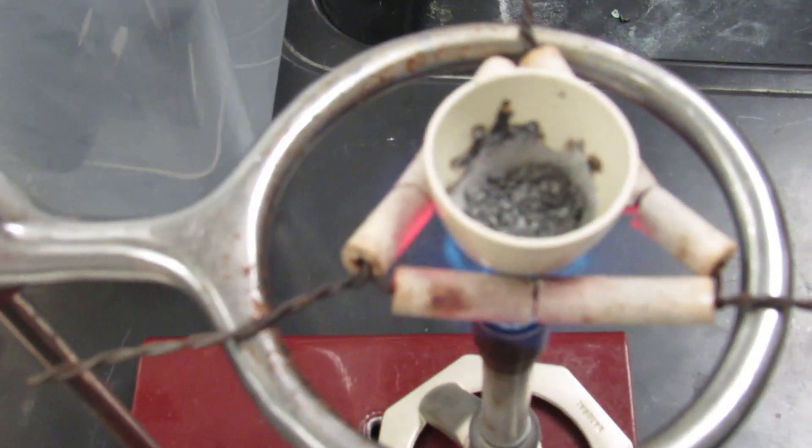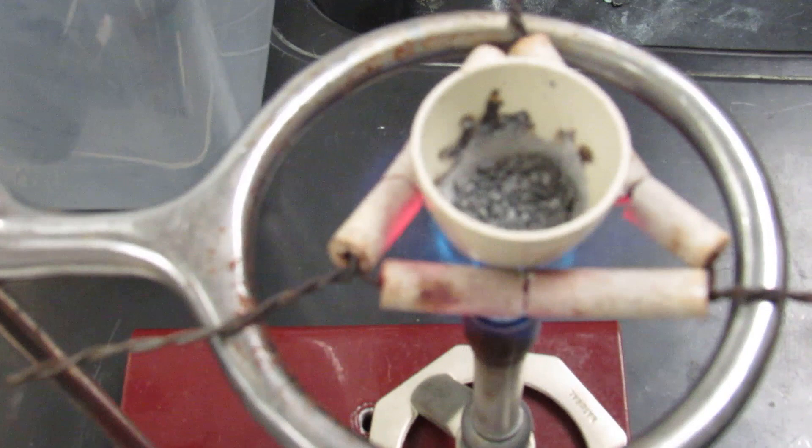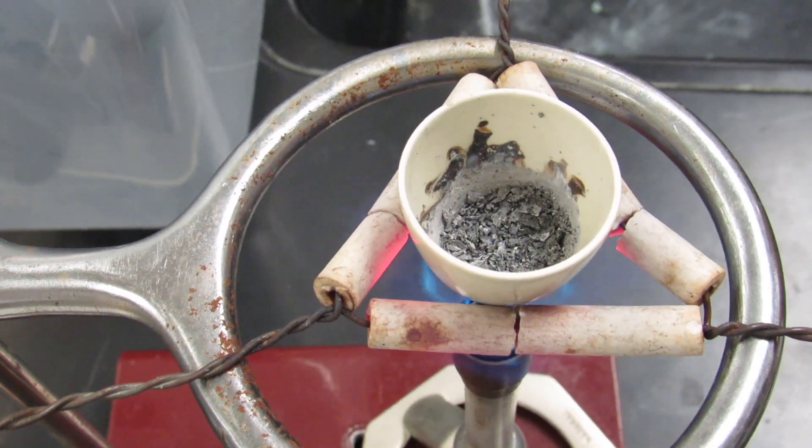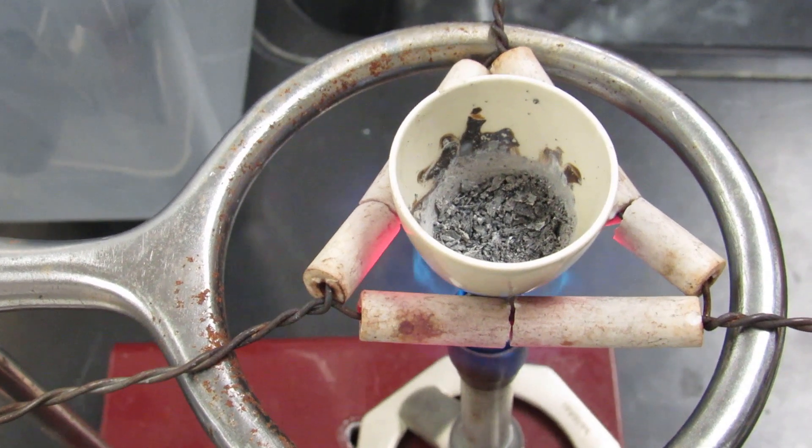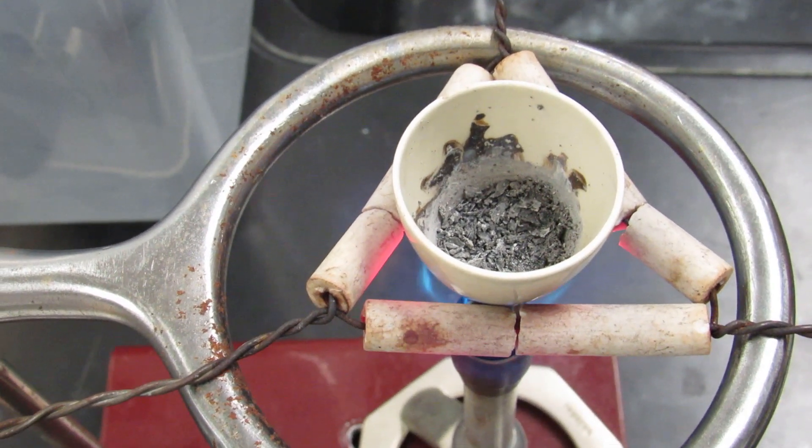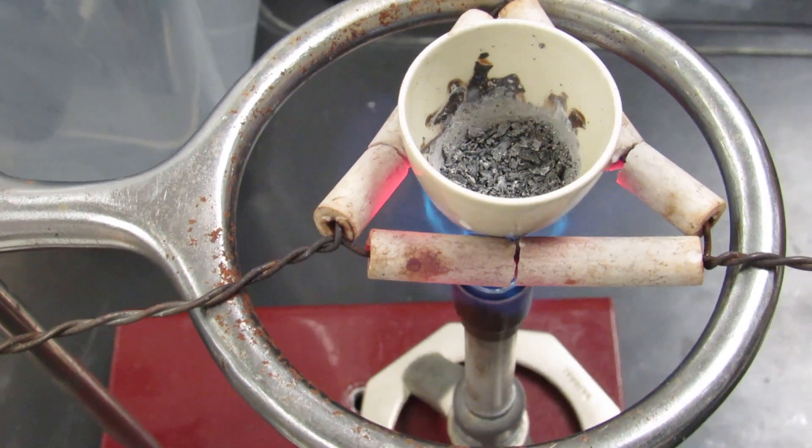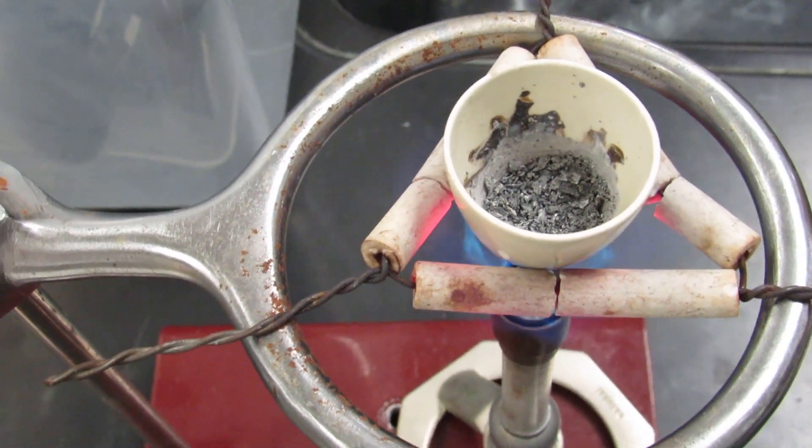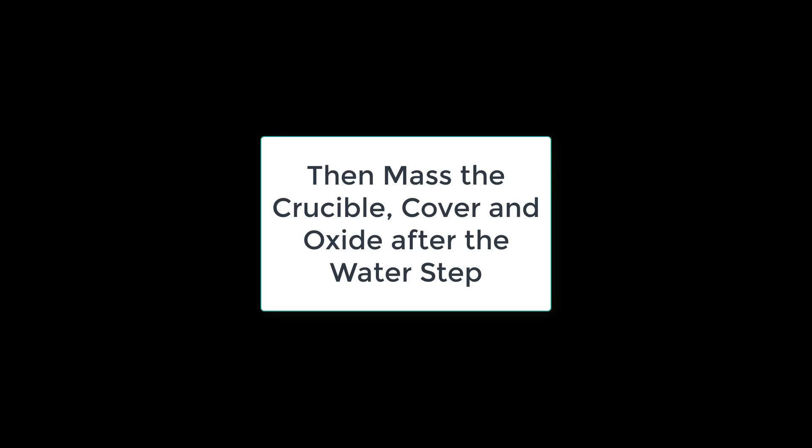I repeated it a second time. The reason for the water step is to turn the magnesium nitride that might be in the sample into magnesium oxide. Most of the air is nitrogen, so most of the air that reacted with the magnesium gives you magnesium nitride. We're trying to convert as much as possible over to magnesium oxide, which is white.